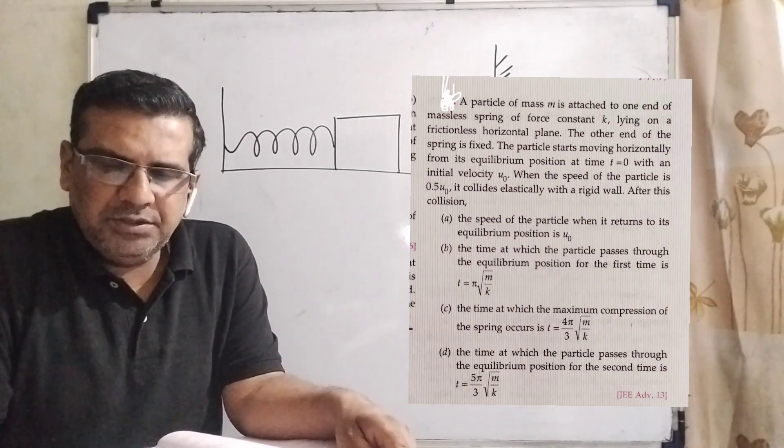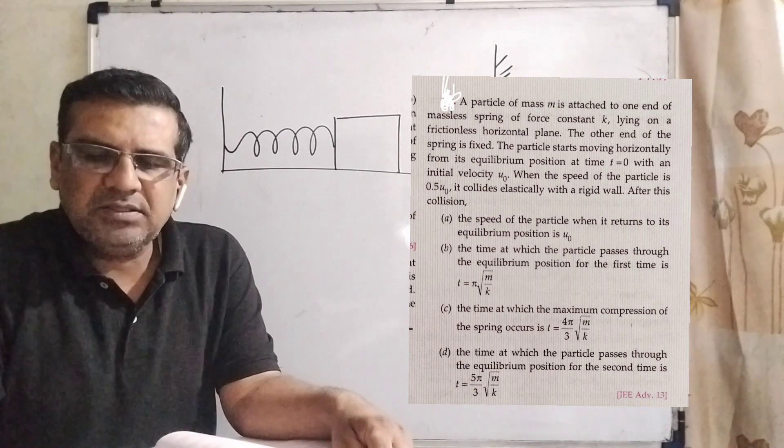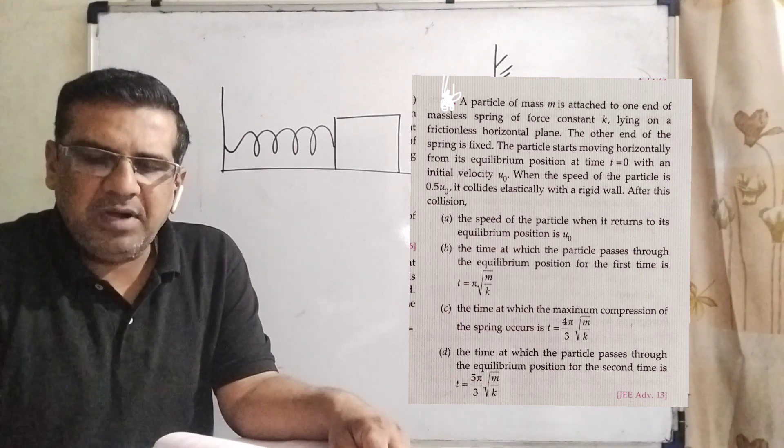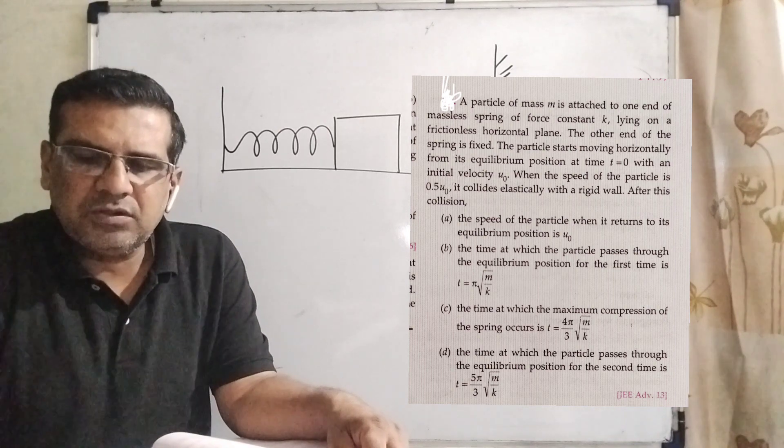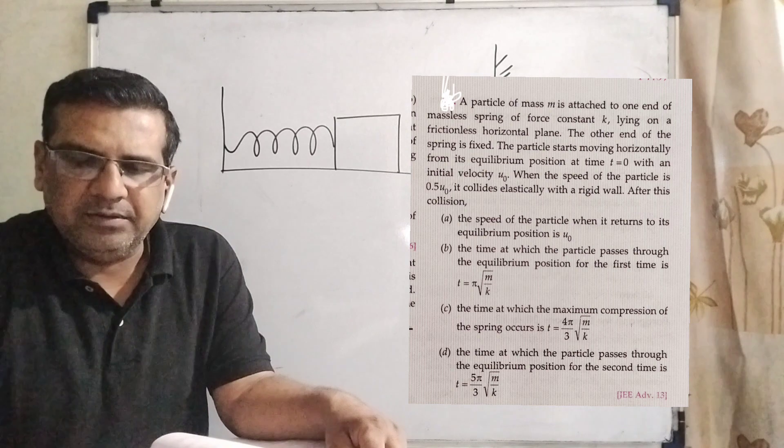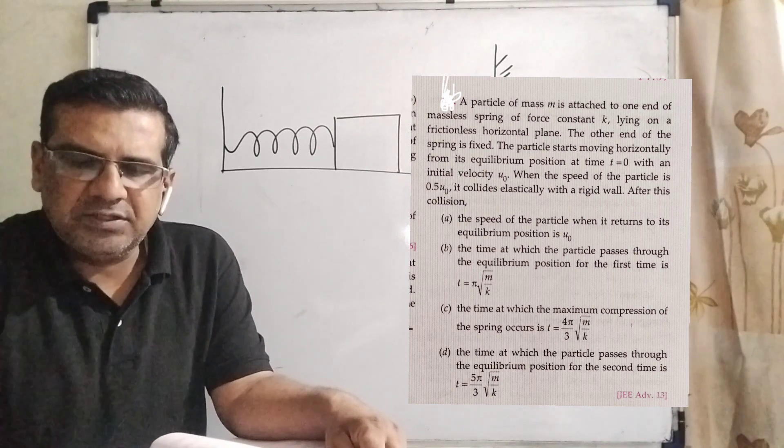The question is: a particle of mass small m is attached to one end of a massless spring of force constant k lying on a frictionless horizontal plane. The other end of the spring is fixed.